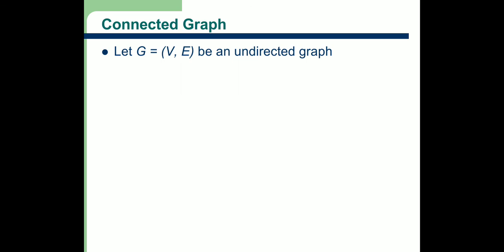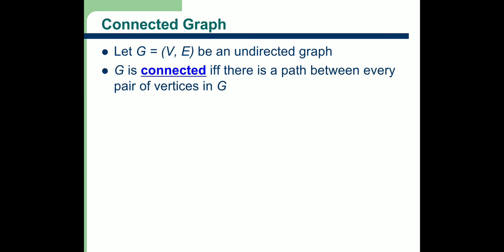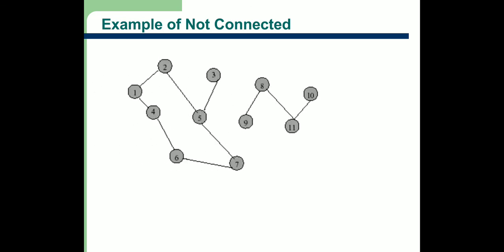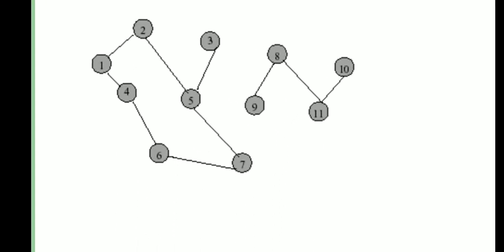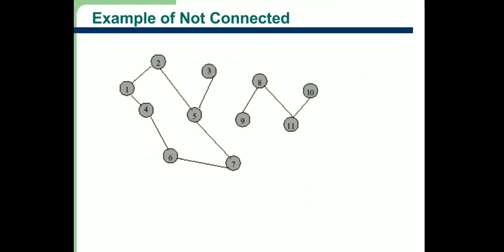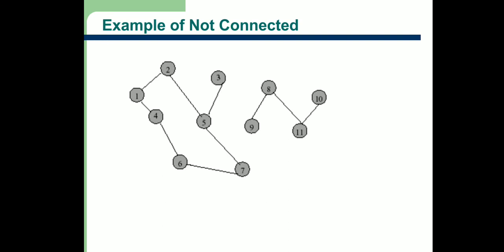Next topic is connected graph. A connected graph is one where there is a path between every pair of vertices in the graph G(V, E). For example, if we want to go from node 1 to node 5, we can follow the path 1→5 directly, or we can follow the path 1→4→6→7→5. Similarly, to go from node 1 to node 6, we go 1→4→6. If there is a path between any two nodes, then that graph is known as a connected graph.